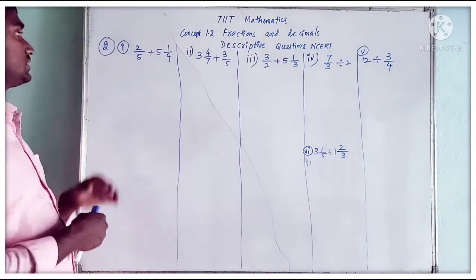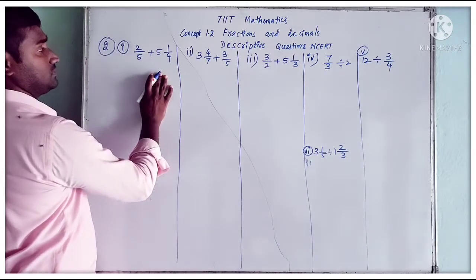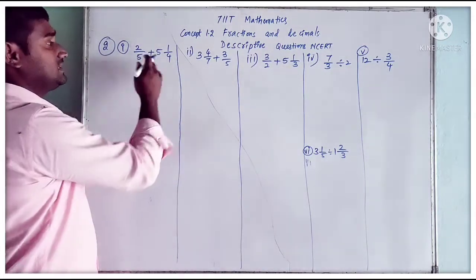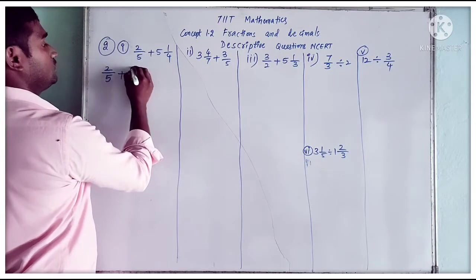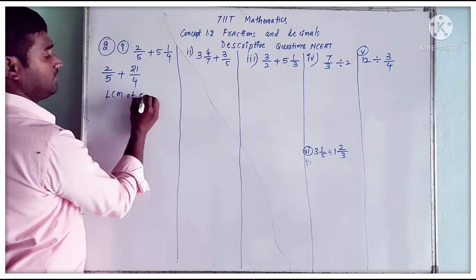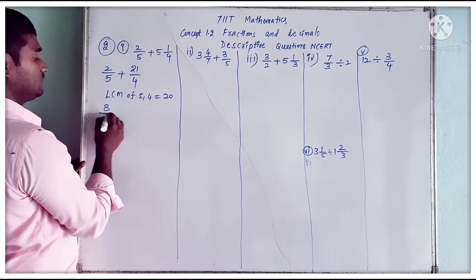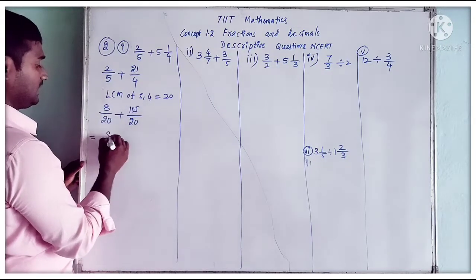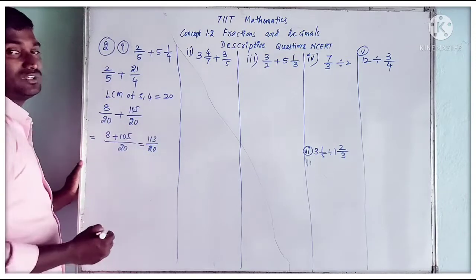Now I am going to discuss the second question, which has 6 parts. In the first part we have 2 by 5 plus 5 and 1 by 4. One fraction is in mixed fraction form, so we convert it to improper: 5 and 1 by 4 becomes 21 by 4. Now we have different denominators, so we find LCM of 5 and 4, which is 20. Multiplying: 2 by 5 becomes 8 by 20, and 21 by 4 becomes 105 by 20. So 8 plus 105 equals 113 by 20, or in mixed fraction, 5 and 13 by 20.